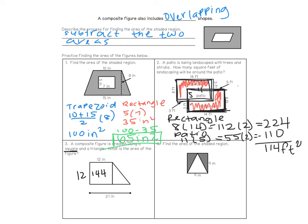For the triangle: the bottom of the square is also 12, and the total length is 21, so 21 minus 12 gives us a base of 9 for the triangle. The height is still 12, so 9 times 12 divided by 2 gives us 54 for the triangle. Adding the two: 144 plus 54 gives us a total area of 198 inches squared.